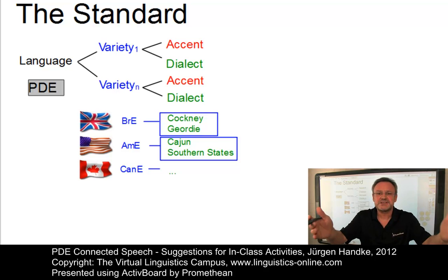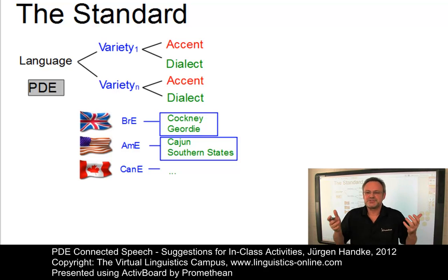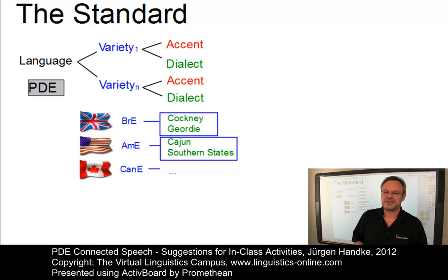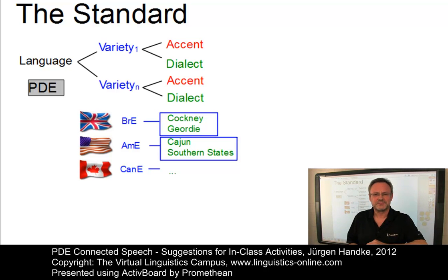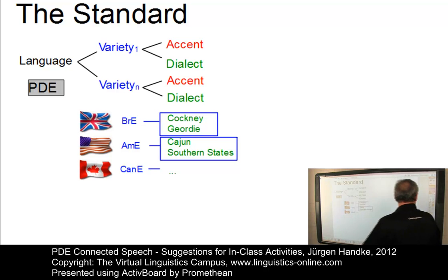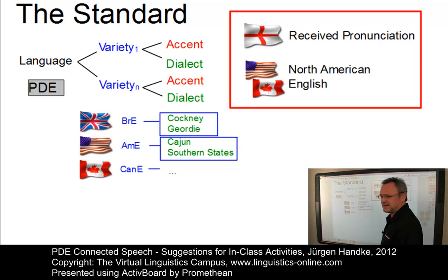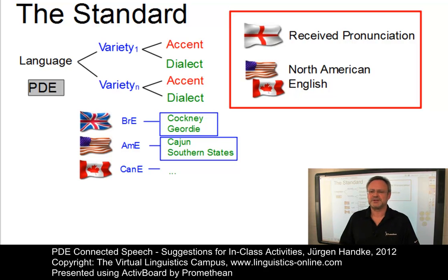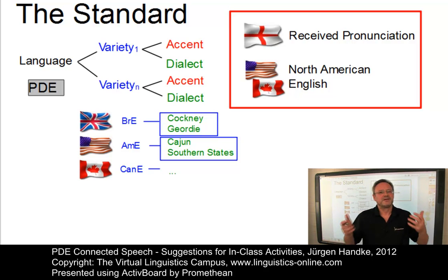And what is an accent? An accent is a variety that differs from the standard in terms of phonology only. Some people even use the term 'phonological dialect' instead. So the central accents are received pronunciation and North American English, and that's in fact our focus in this class.